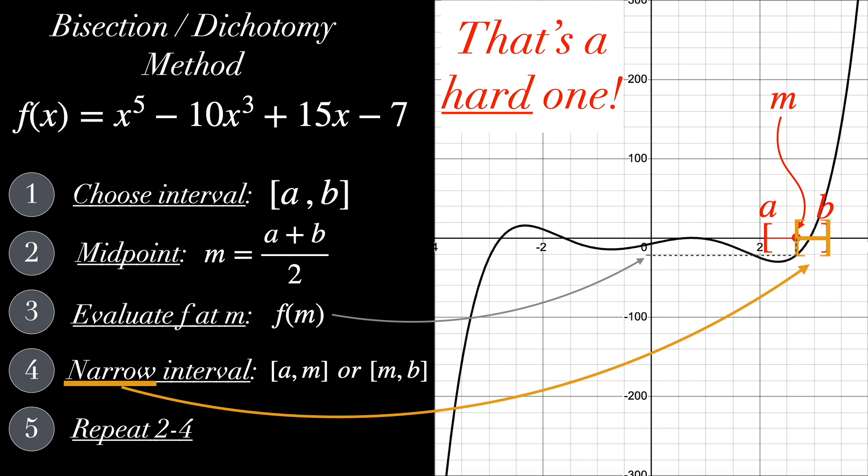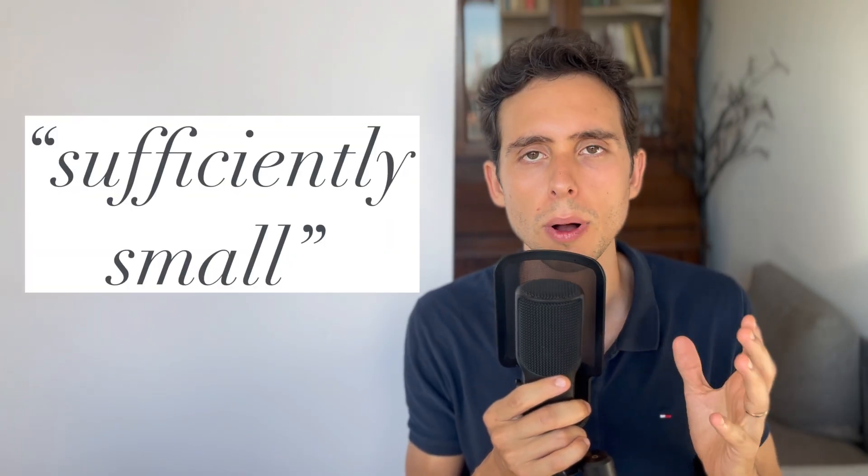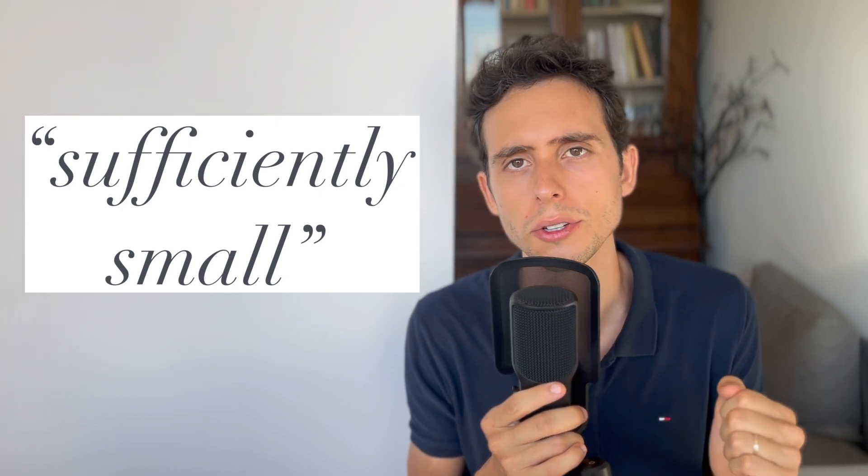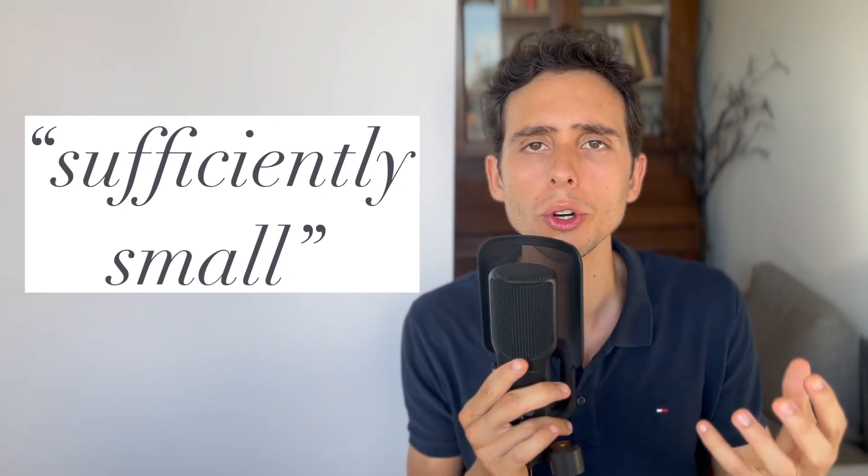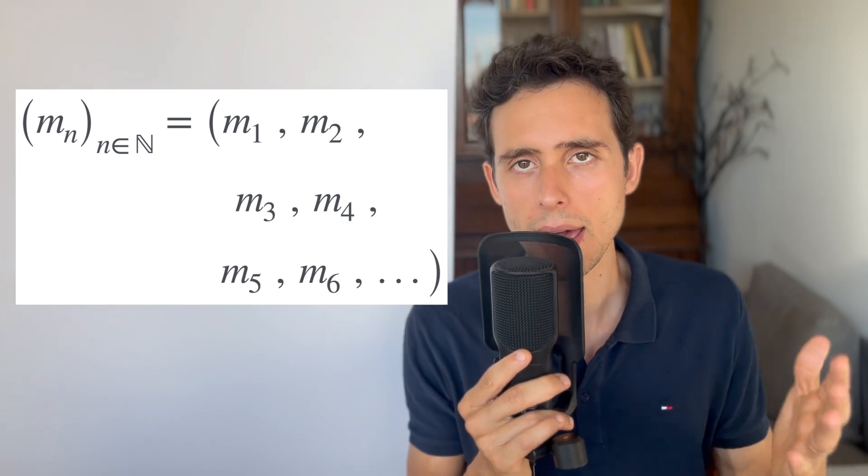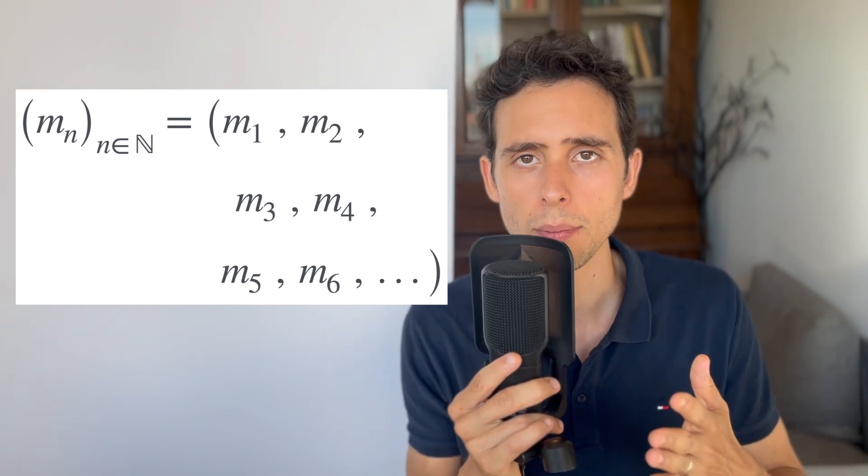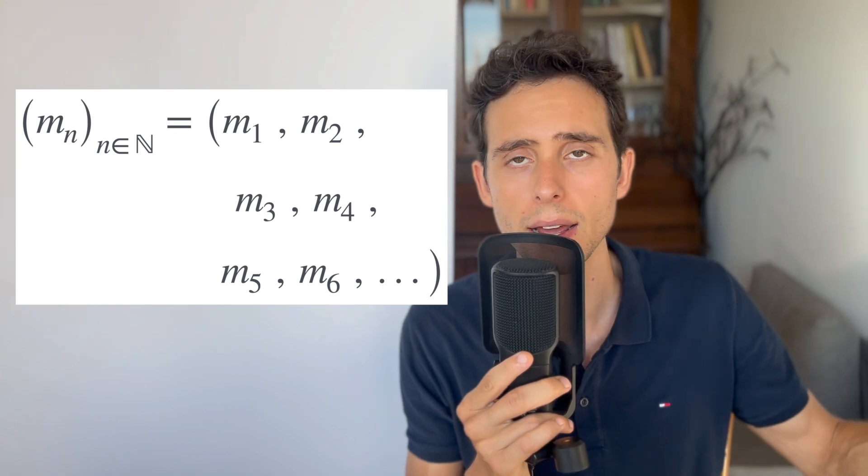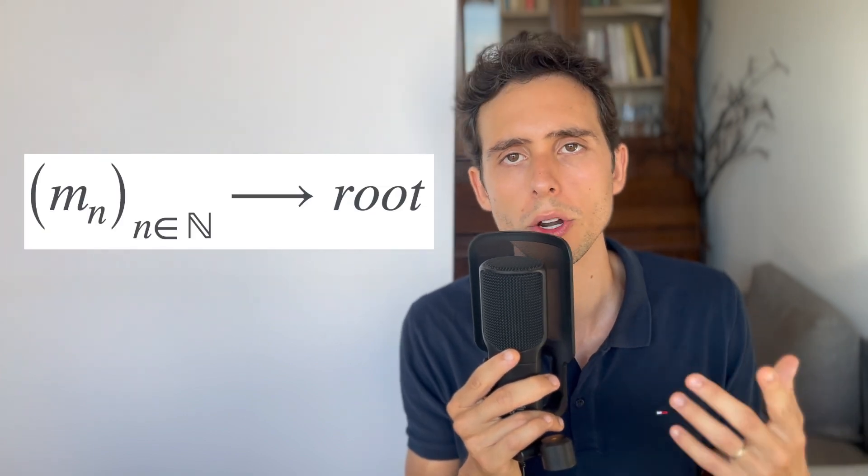And then you just repeat steps 2 to 4 until the interval a, b is sufficiently small. The words sufficiently small here are subjective, of course. In other words, it depends on how good you want your approximation to be. The midpoint m will then be your estimated root. If you are not satisfied with an approximation and you want to find the exact solution instead, you could build a sequence mn with all the midpoints m of each iteration n. And this sequence converges to one of your roots.